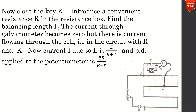Now close the key K1 and introduce a convenient resistance R in the resistance box. Find the balancing length L2. The current through the galvanometer becomes zero, but there is current flowing through the cell — that is, in the circuit with R and K1. The current I due to E is E divided by R plus r, and the potential difference applied to the potentiometer is ER divided by R plus r.